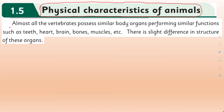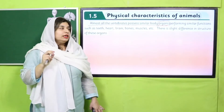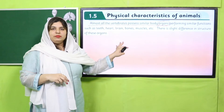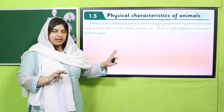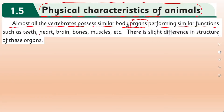In your book, almost all vertebrates possess similar body organs. We have previously studied vertebrates and invertebrates — their body structures, differences, and similarities. Now we will study how body organs are the same in all vertebrates, but the difference is in their structure. These organs are present in all vertebrates, but their structure is different in different animals.